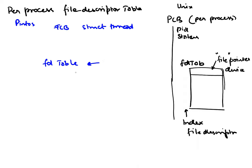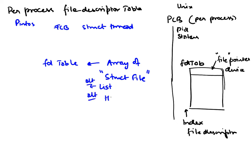Inside struct thread we'll add a file descriptor table. The question is what data structure to use. The simplest answer is to make it an array of struct file pointers, since in this lab we won't use anything other than struct files. Alternatively, you could use a list or a hash table — I have demos of both — but to keep it simple I'd suggest just using an array. The question then is how big: a conservative starting size of 20 entries should work.